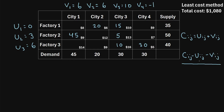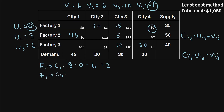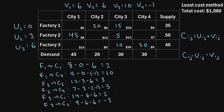We use the formula again for all of the unallocated cells. For factory 1 to city 1: 8 minus 0 minus 6 equals 2. For factory 1 to city 4: 9 minus 0 minus negative 1 equals 10. After repeating this for the remaining unallocated cells, we see that there is still a negative value, so we have not yet reached the optimal solution. We identify that cell — factory 3 to city 2 — as the starting point for our next closed loop.